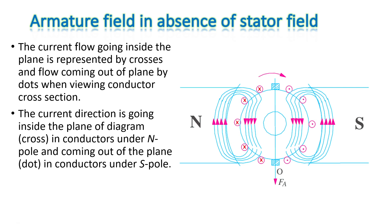Current flow going inside the plane is represented by a cross, and flow coming out of the plane is represented by a dot when viewing conductor cross-sections. The current direction is going inside the plane in conductors under the influence of the north pole, and coming out of the plane for conductors under the south pole.